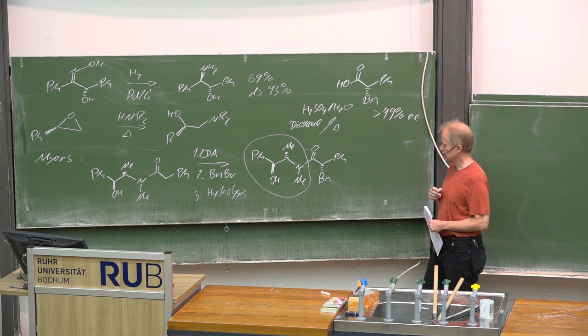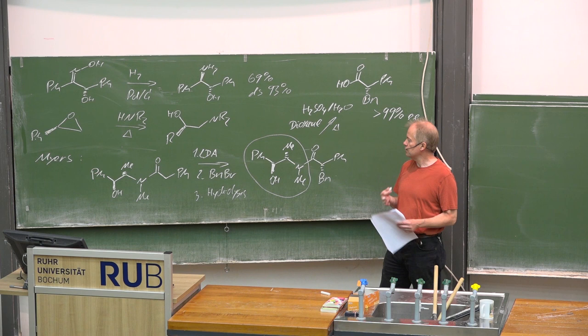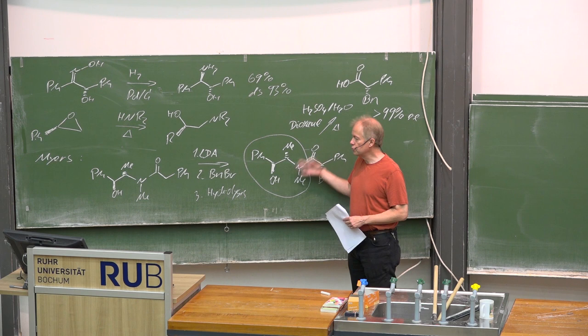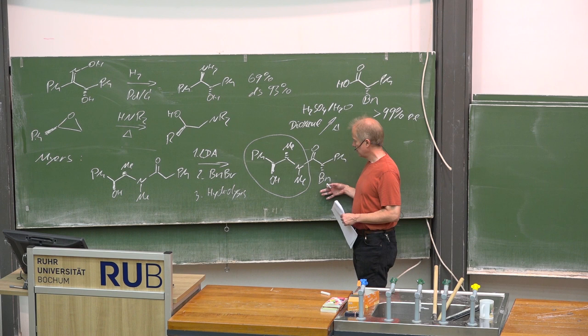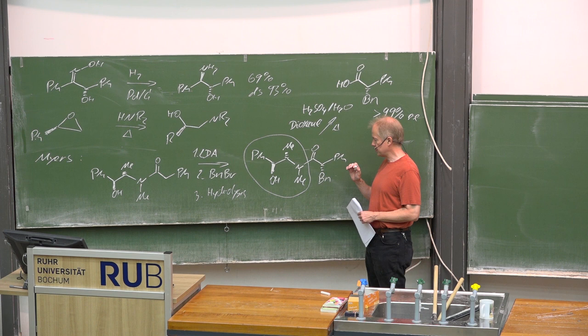Hydrolyzing the chiral auxiliary off delivers in high enantioselectivity the target enantiomer. Nice about the use of chiral auxiliaries is that different diastereoisomers have different properties, for instance solubility, so you can recrystallize and therefore improve the diastereoselectivity.